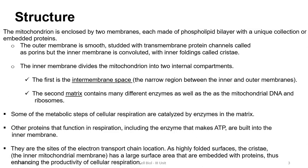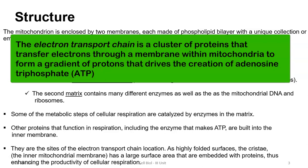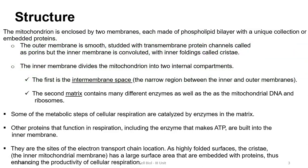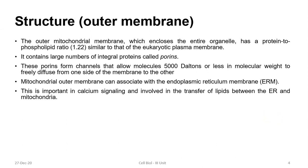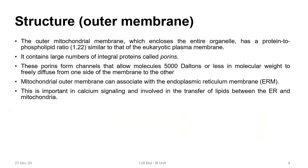The cristae, being highly folded surfaces of the inner mitochondrial membrane, provide a large surface area to fit the various proteins related to the electron transport chain. These proteins are embedded and present as a chain inside the membrane, enhancing the productivity of cellular respiration. The outer mitochondrial membrane encloses the entire organelle with a protein-to-phospholipid ratio of 1.22, similar to the eukaryotic plasma membrane. It contains large numbers of integral proteins called porins, which form channels allowing molecules of 5000 Daltons or less to freely diffuse across.